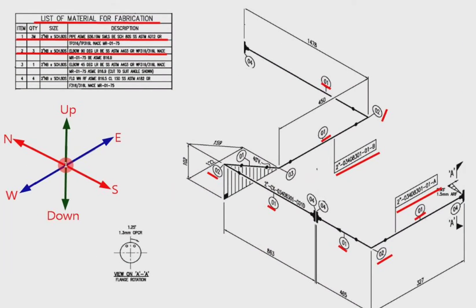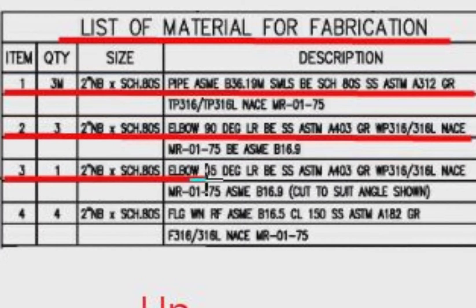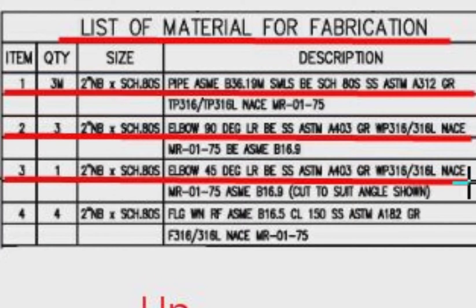Detail number three: the quantity is 1 piece, 2 inches schedule 80S elbow, 45 degree, long radius. The material is stainless steel.